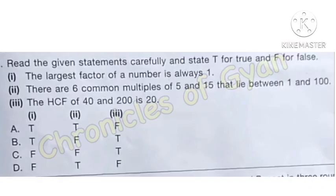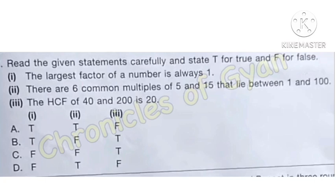Question 32: read the given statements carefully and mark T for true and F for false. There are 3 statements which we'll solve one by one. Statement 1: the largest factor of a number is always 1. Now, 1 is actually the smallest factor of any number — for example, 1 is the smallest factor of 25. The largest factor of a number is the number itself.